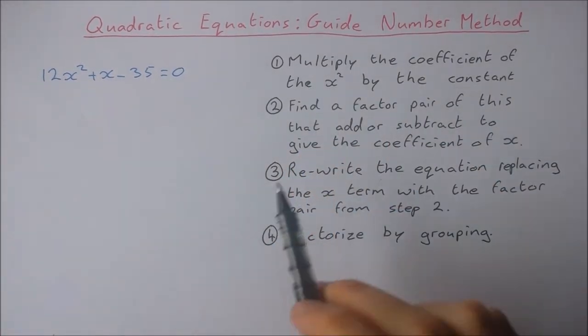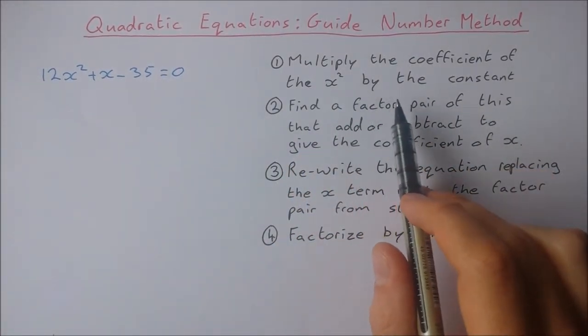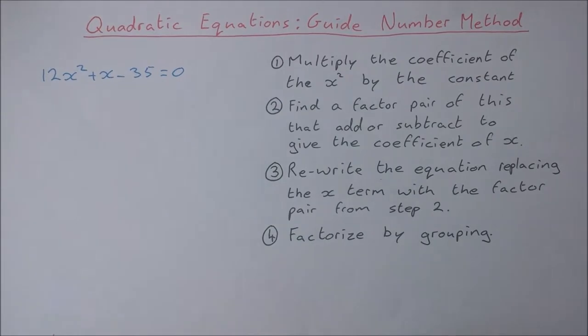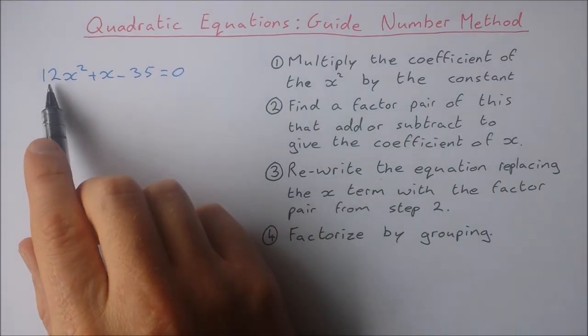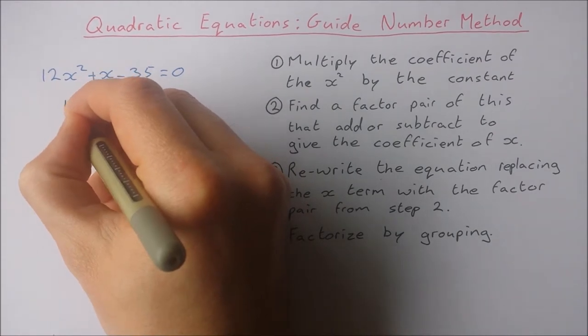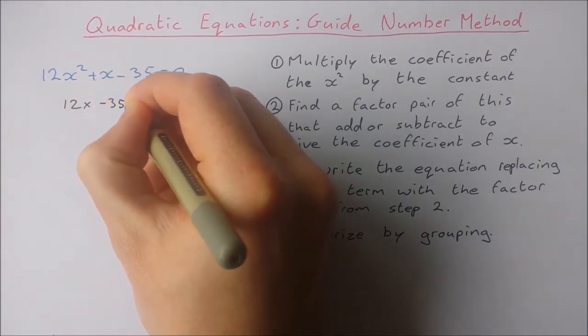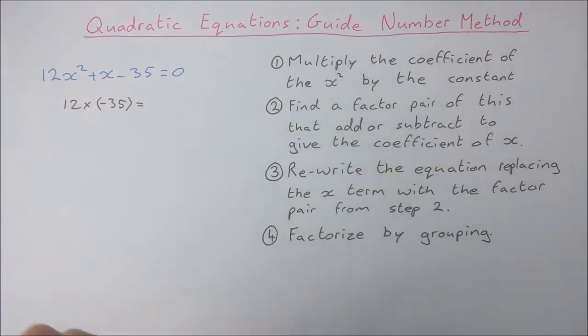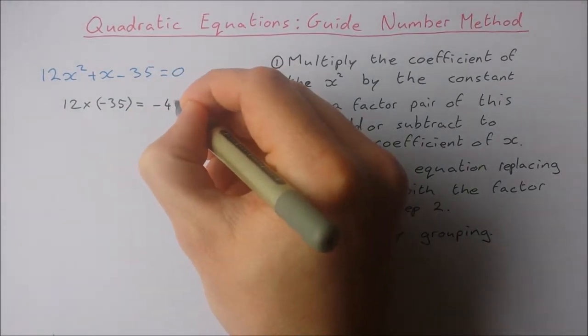So I'm going to follow these steps here. Step 1: multiply the coefficient of the x² by the constant. The coefficient of x² is 12, the constant is -35, so that's 12 times -35 which will give me -420.